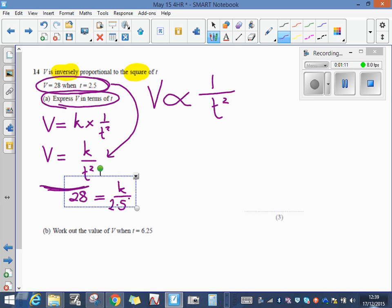If I just rewrite that, 28 equals k, we're going to multiply both sides by 2.5 squared. 2.5 squared is actually 6.25, so we've got 28 equals k divided by 6.25.